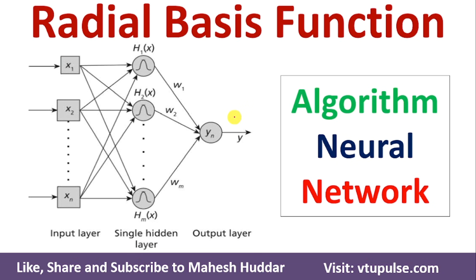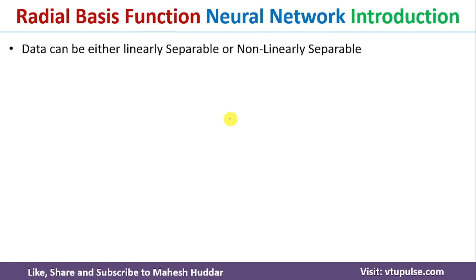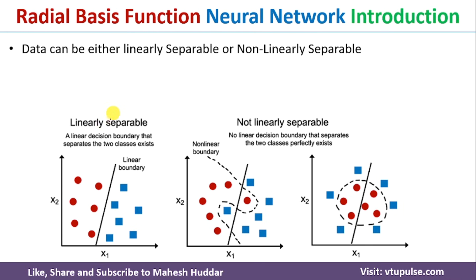Welcome back. In this video I will discuss radial basis function in artificial neural network with a simple example. When you talk about data and machine learning, data exists in two forms: the data can be either linearly separable or non-linearly separable. In this example, the data shown in the first diagram is linearly separable because if you draw a straight line the data can be divided into two groups. But in the second and third diagrams, whenever we draw a straight line we cannot divide the data into two groups — we need to draw a non-linear curve.